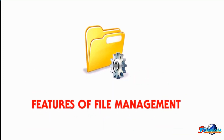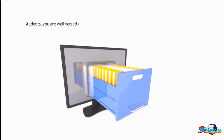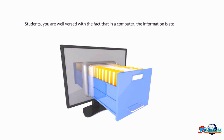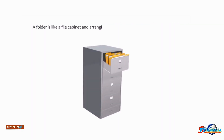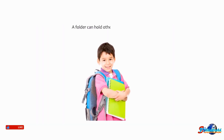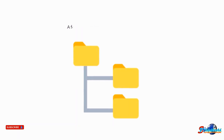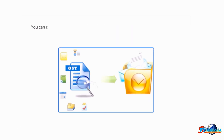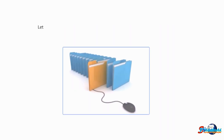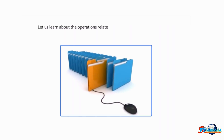Hello students, today we will learn about file management. In a computer, information is stored in a file and all related files are clubbed inside a folder. A folder is like a file cabinet — arranging files in it makes it easy to locate them. A folder can hold other folders as well; a folder within a folder is called a sub-folder. You can differentiate a file from a folder with the help of icons associated with them.